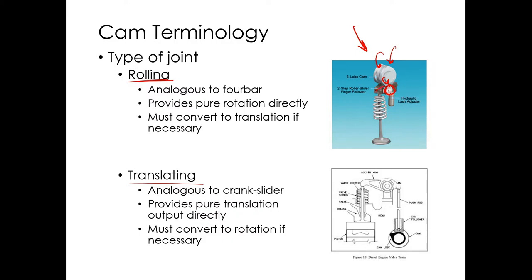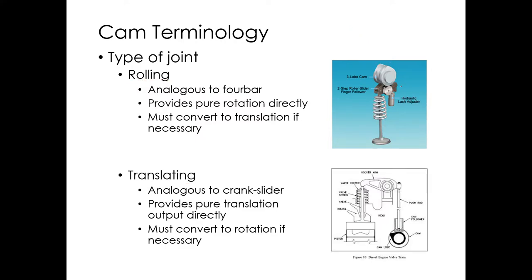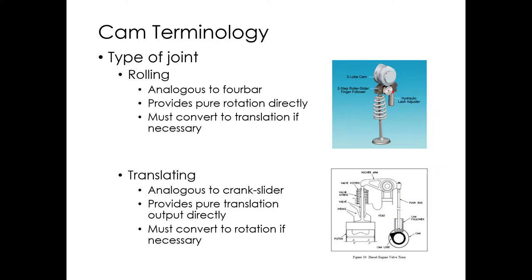The roller sits on an arm with a fixed pivot, so the rocker pivots about that point. The cam rotates, pushes on the roller, rocks the follower down, and that pushes the valve open — letting air into or out of the engine depending on whether it's the intake or exhaust valve and where it is in the cycle. That's rolling contact.